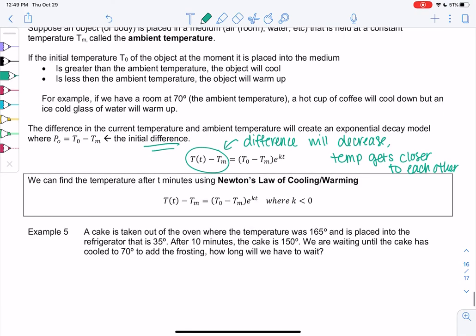So Newton's law of cooling tells us that the current difference is equal to the initial difference times E to the KT, where K is negative for exponential decay.